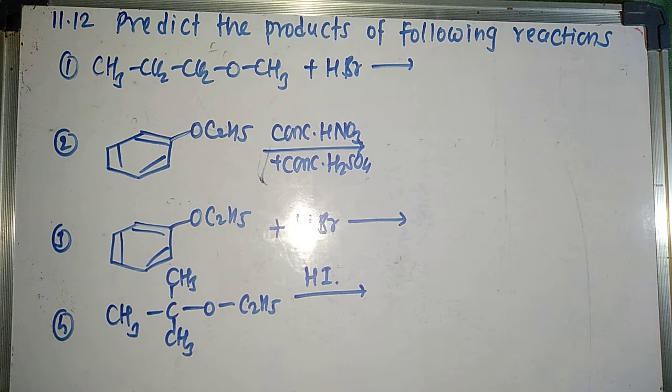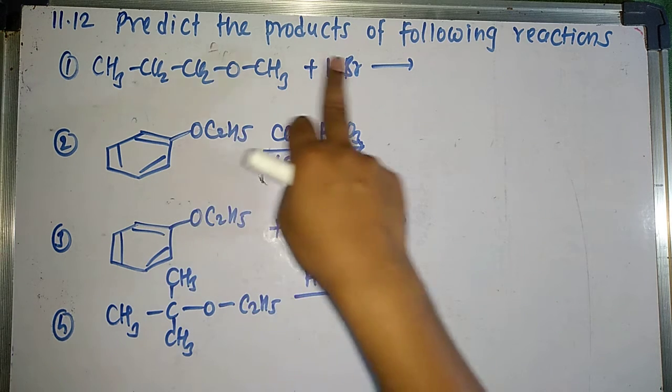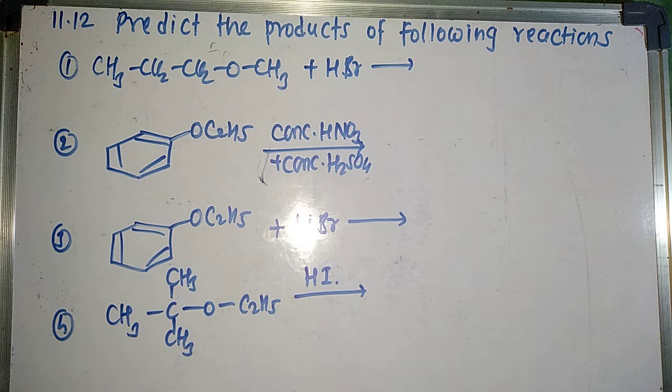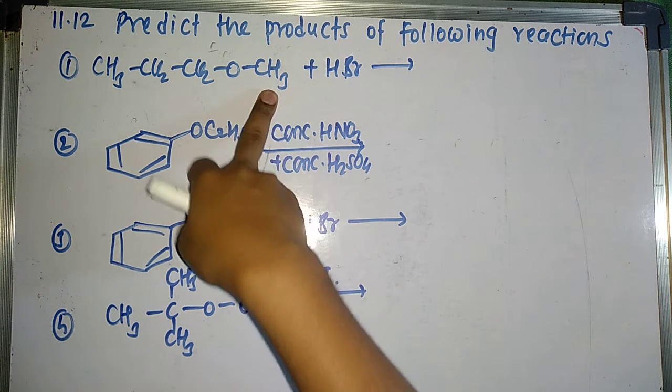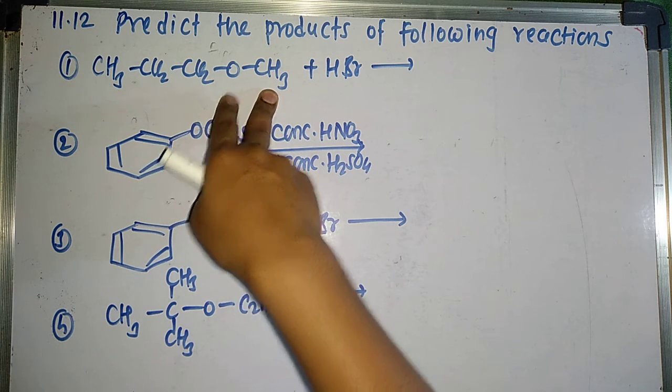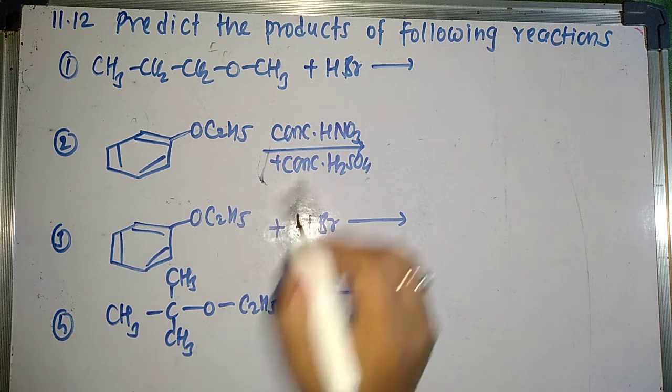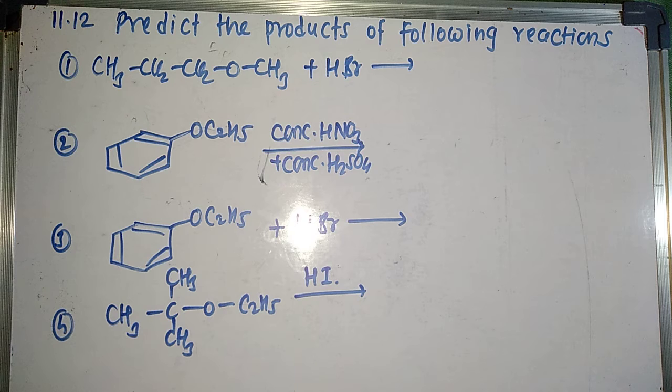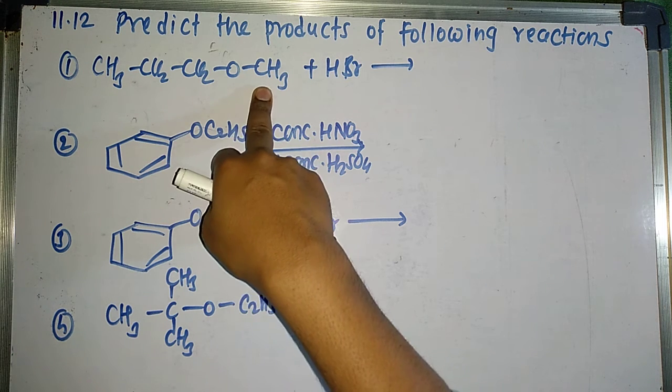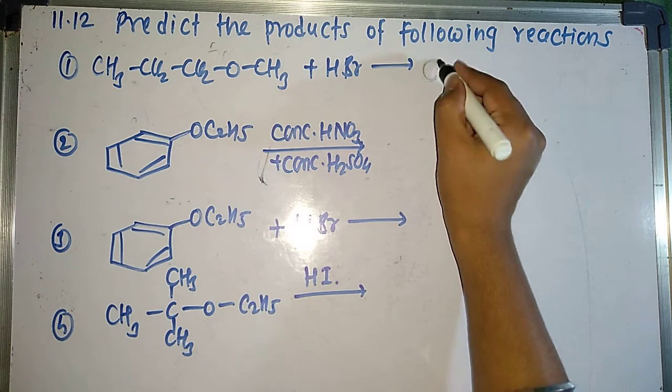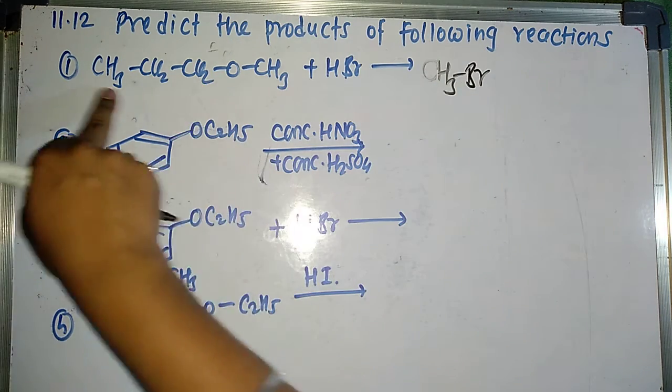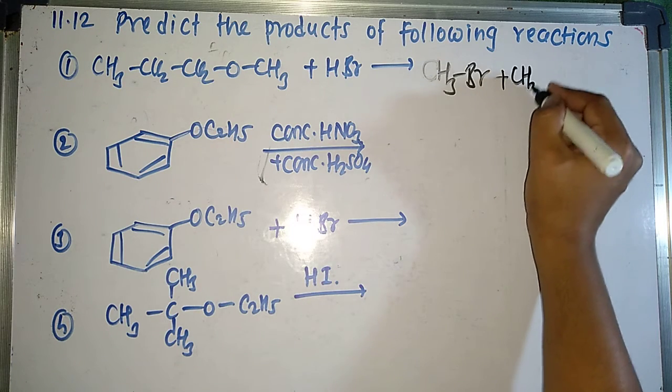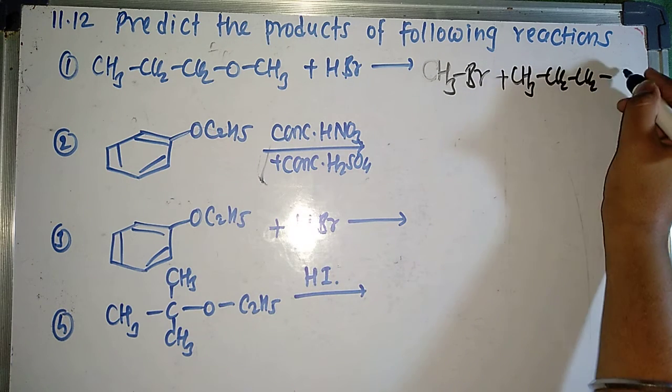So the next question is 11.12: predict the products of following reactions. In the first reaction we are having ether. It reacts with HBr. So this reaction is a cleavage of ether. So whenever we are giving HBr in this case, remember at the cold condition, one alkyl group will form alcohol, other will form alkyl bromide or alkyl halide. At hot condition, both will form alkyl halide. In this case alkyl bromide at hot condition. At cold condition, one is the alkyl bromide, other is the alcohol. Remember small alkyl group always forms alkyl bromide. So I will get here CH3Br. Large alkyl group will always form an alcohol. So the product will get CH3-CH2-CH2-OH.